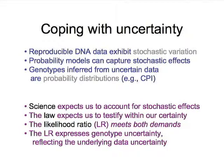Probability models can capture the stochastic nature of the data, and in all methods of interpretation, including mixtures and protocols that you follow, genotypes are inferred from these uncertain data, and they are all probability distributions. Even inclusion is a probability distribution. Science expects us to account for the stochastic effect somehow, and the law expects us to testify within our certainty. The likelihood ratio — and all match methods are likelihood ratios, including CPI — meets the demands of both science and law, and that's the measure we'll be using in these studies.